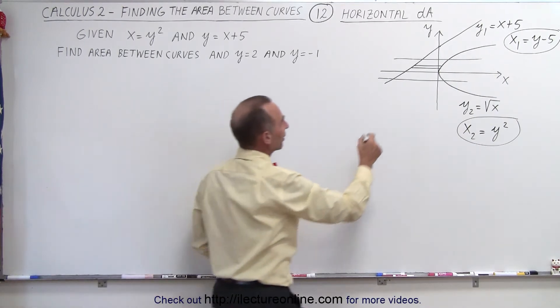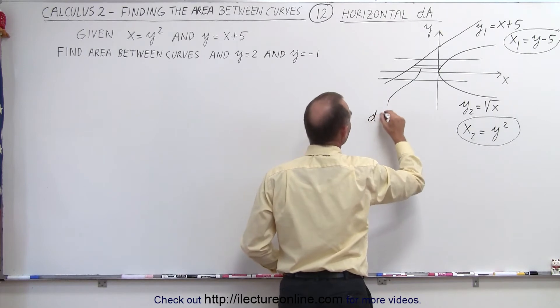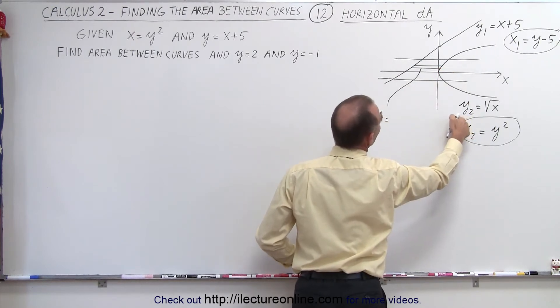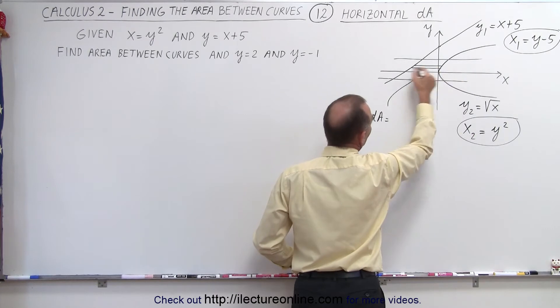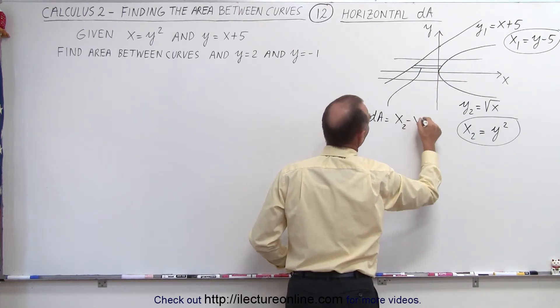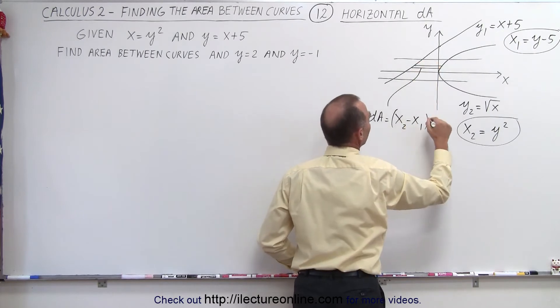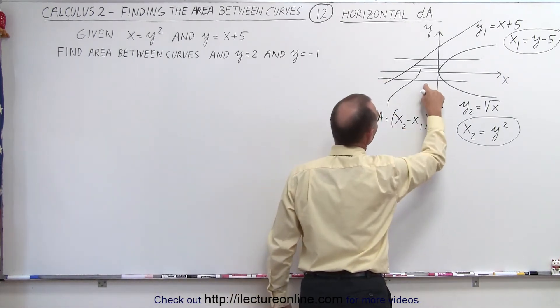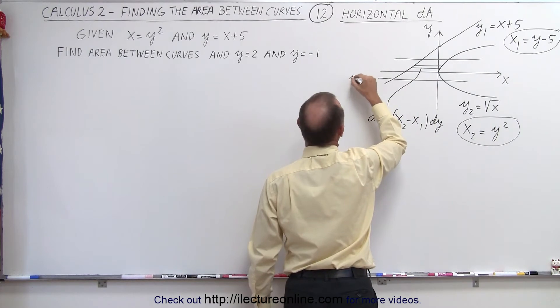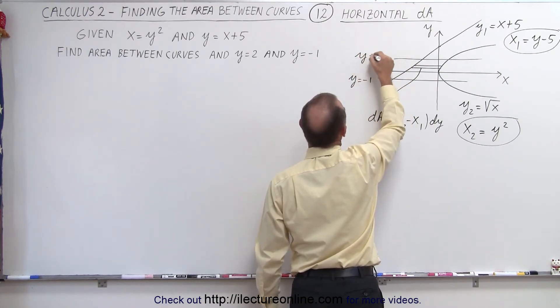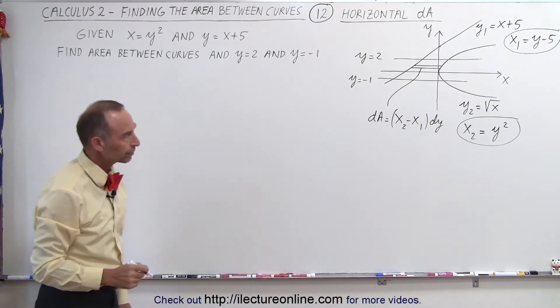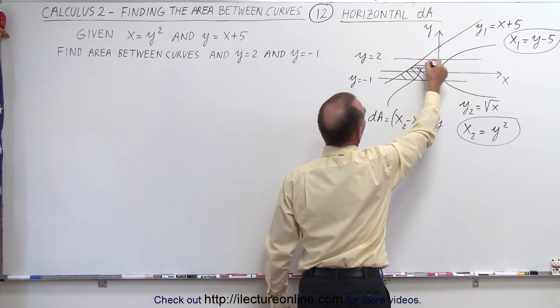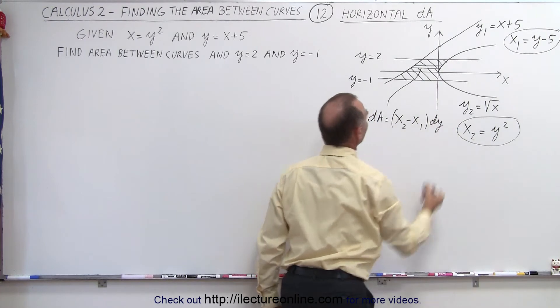If you look at the area element dA right here, you can see that dA is equal to the length, which is the upper limit minus the lower limit, so it would be equal to x2 minus x1 because that's in the x direction. Then the thickness of the dA element is dy. So there's your area element, and the limits in the y direction will be from minus 1 to positive 2. This line here is y equals minus 1, and this line is y equals 2, so those will be the limits of your integration. That's the area we're looking for.